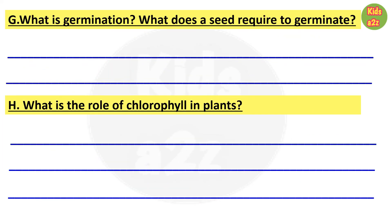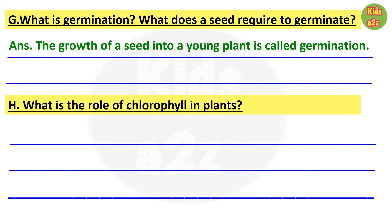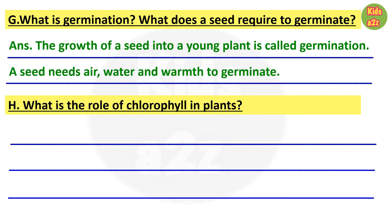Question G: what is germination? What does a seed require to germinate? Answer: the growth of a seed into a young plant is called germination. A seed needs air, water, and warmth to germinate.